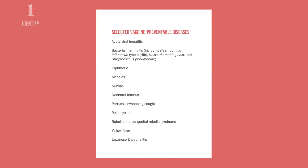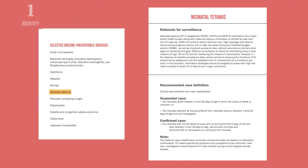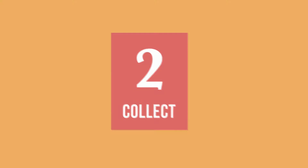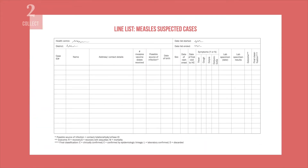To identify a reportable case, refer to the standard case definition of the vaccine-preventable disease provided by your national authorities. Then, collect information about each case using the line list. The format of the line list may vary by disease and disease control activity requirements.